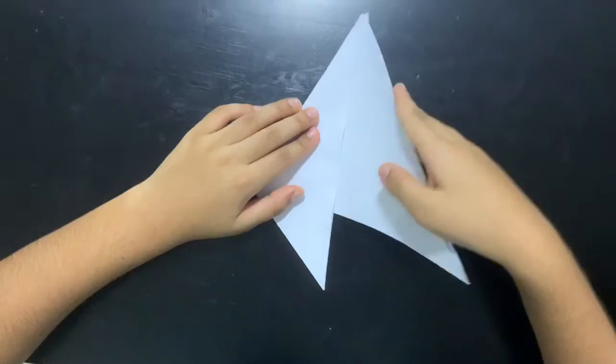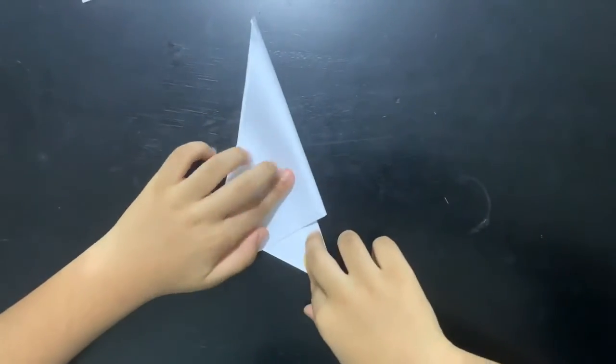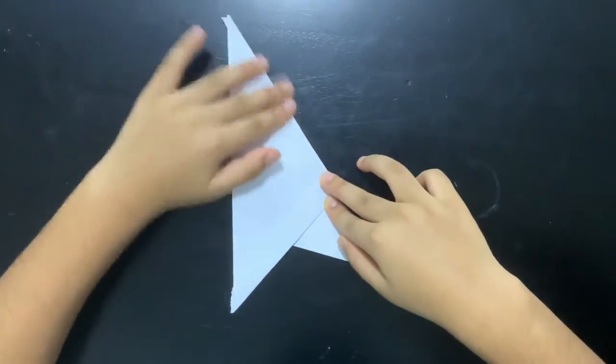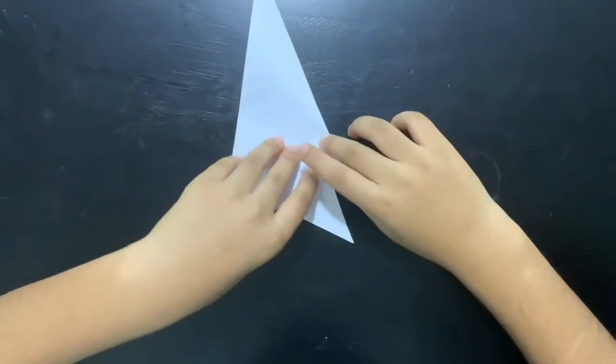Then fold this over this one. Like this. This flap should be coming over and there should be a little triangle here.